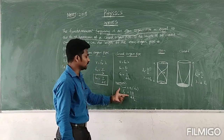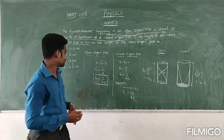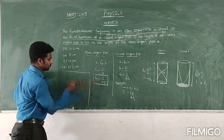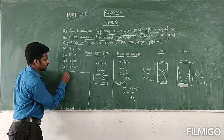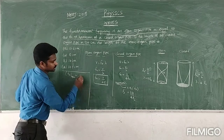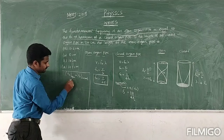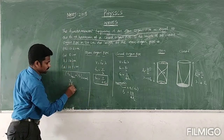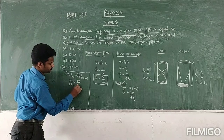The condition is: the fundamental frequency of the open organ pipe equals the third harmonic frequency of the closed organ pipe. So we can write the fundamental frequency of the open organ pipe equal to 3V divided by 4 times Lc.